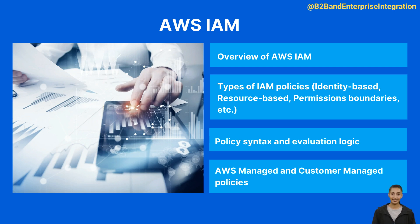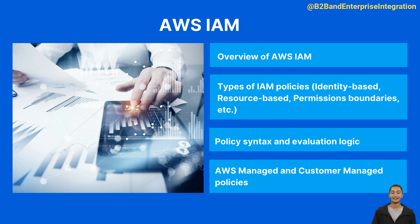Here is an overview of IAM policies. 1. Types of policies: identity-based policies are attached to IAM identities — users, groups, or roles — and grant permissions to a principal. Resource-based policies are attached to resources like S3 buckets or Lambda functions and grant permissions to a principal, which can be in the same account or another account. Permissions boundaries are an advanced feature for delegating permissions management, controlling the maximum permissions a user can have. Service control policies, SCPs, are used in AWS Organizations to set fine-grained permissions for accounts. Access control lists, ACLs, control which principals in another AWS account can access a resource. Session policies control permissions for a session, limiting the permissions that a role or user's credentials can grant to applications.